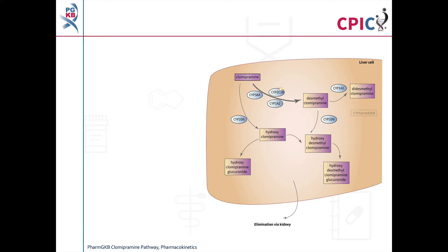This is the PharmGKB clomipramine pharmacokinetics pathway. A link to this pathway is provided in the description below this video. This video will first focus on metabolism of clomipramine by CYP2C19, followed by metabolism of clomipramine by CYP2D6.